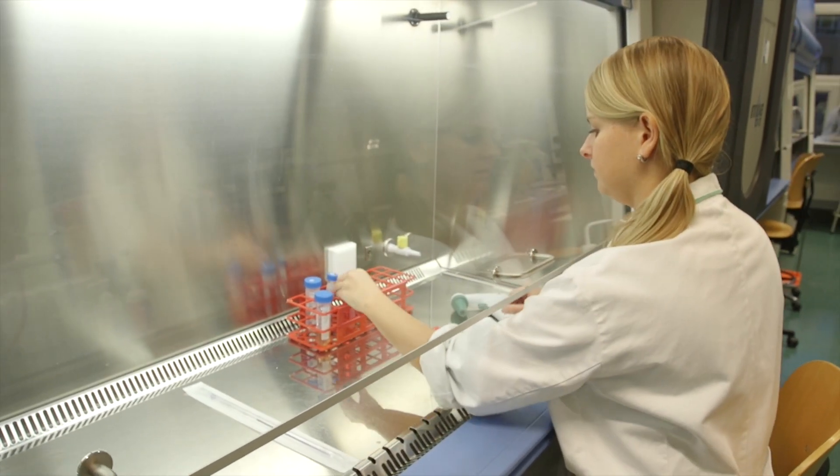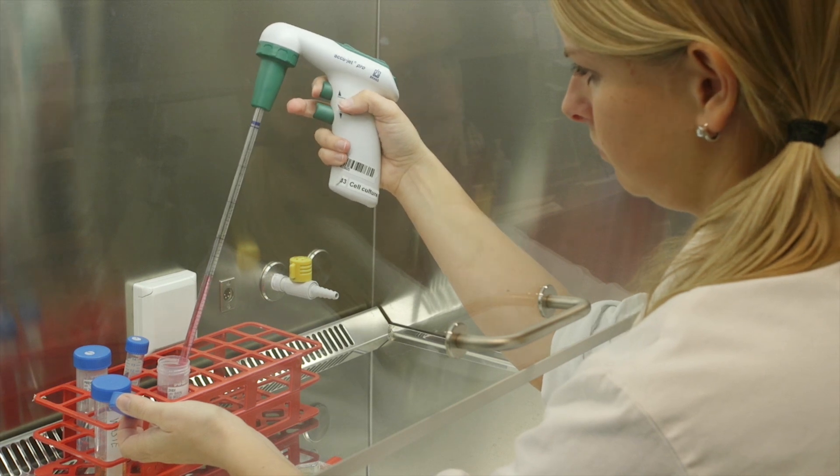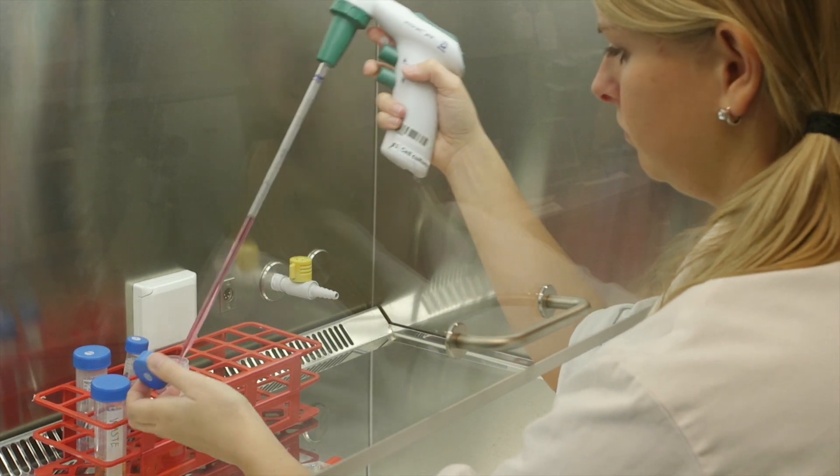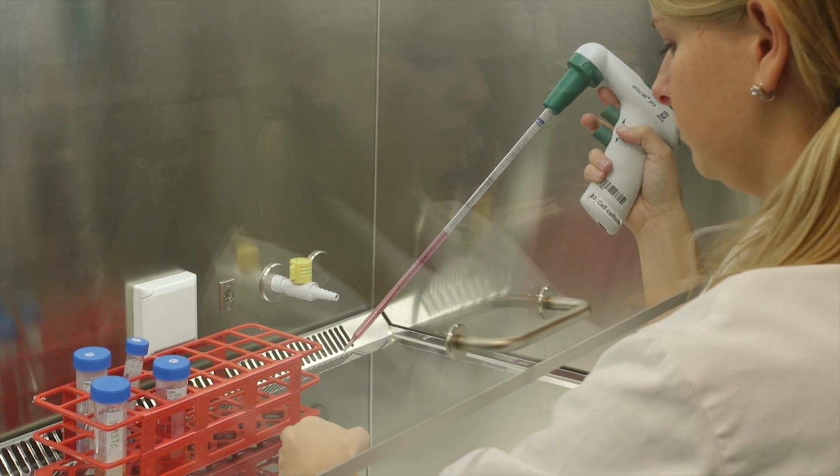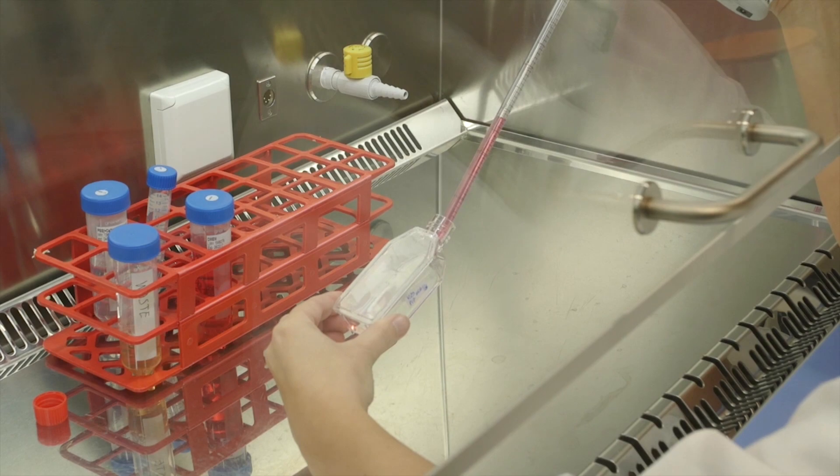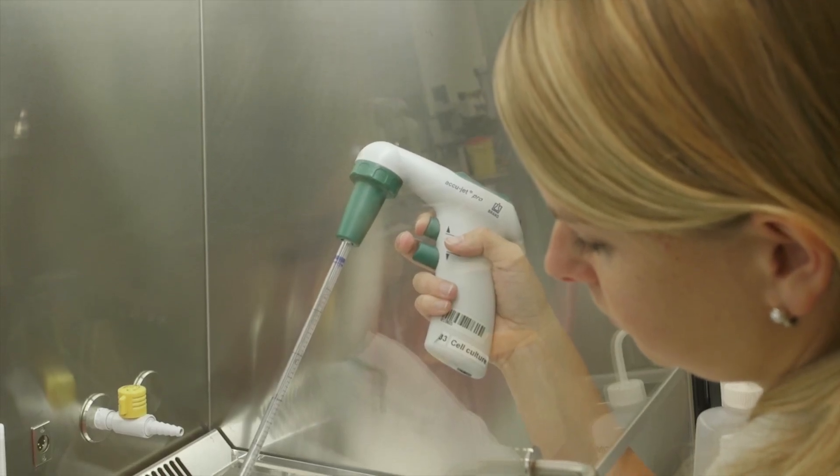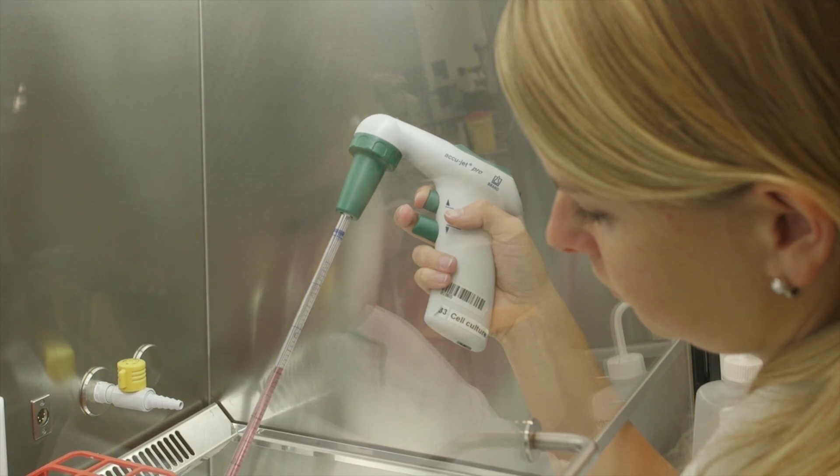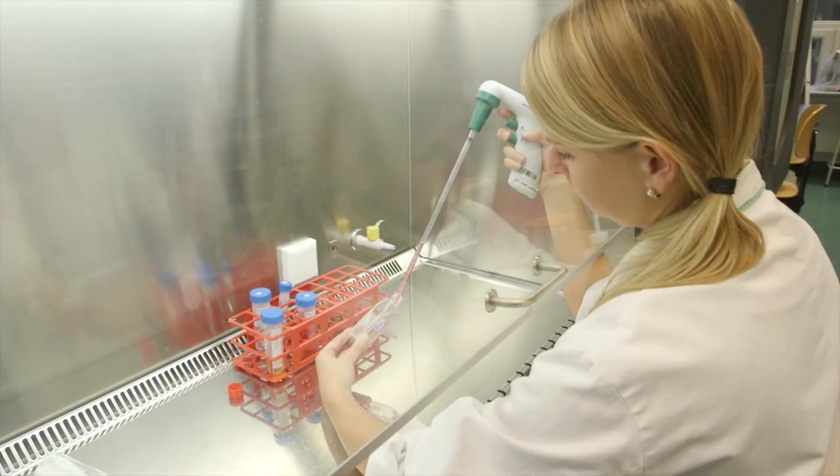When the cells are detached, the trypsin needs to be inactivated. If the cells are left in contact with active trypsin for too long, the cell membrane may be damaged. To do this, we add 4 ml of medium with FCS to the cell suspension. Because some cells may be slightly attached to the bottom, pipette the liquid over the bottom of the flask. This can be repeated several times by aspirating and then dispensing the suspension over the bottom.